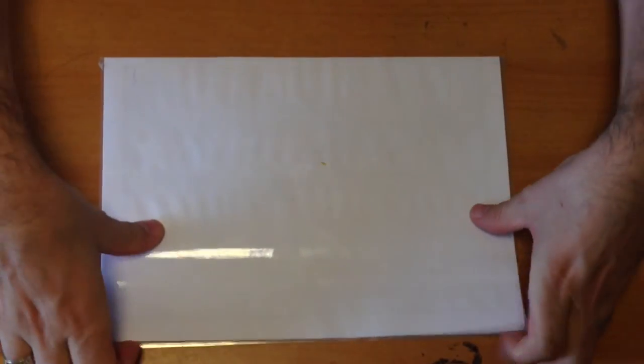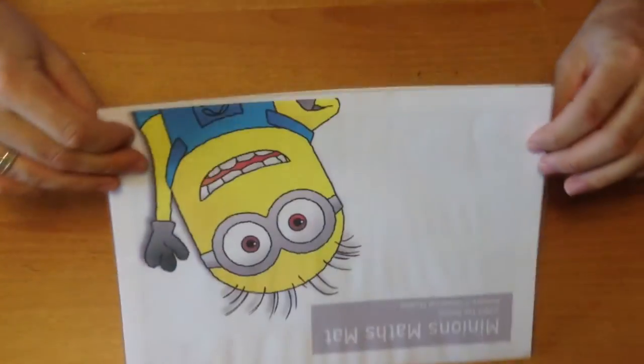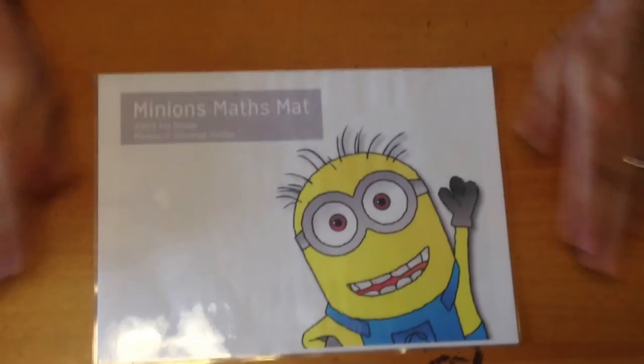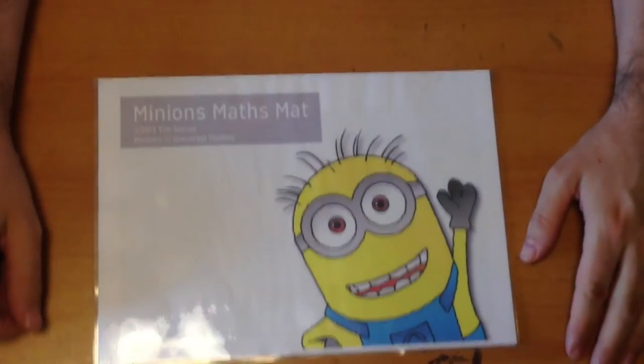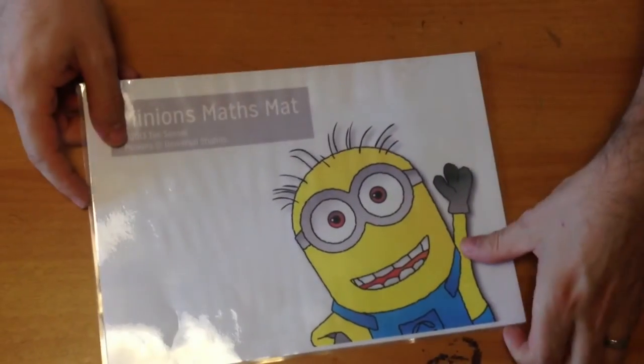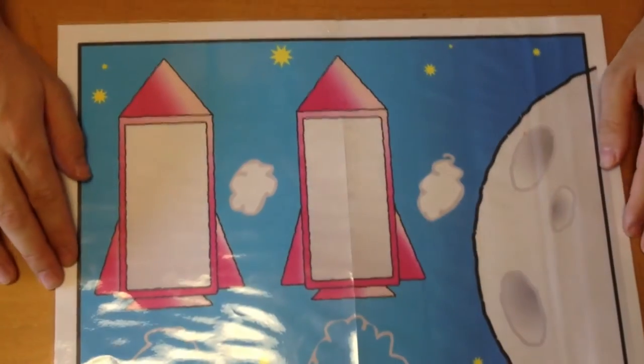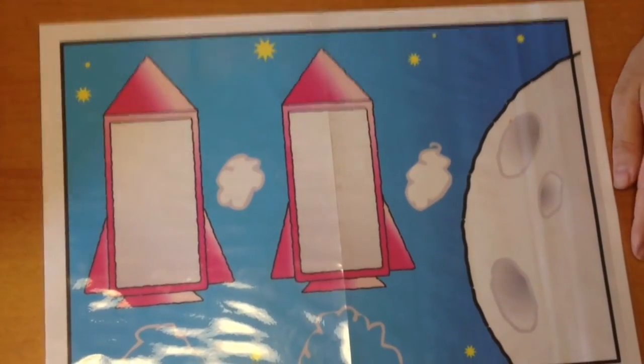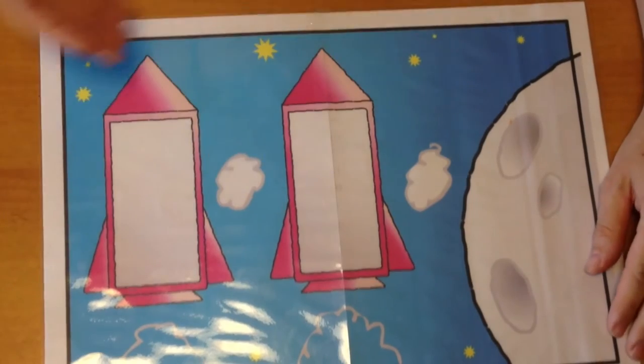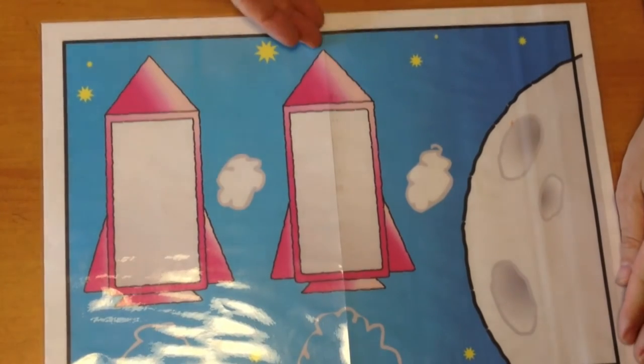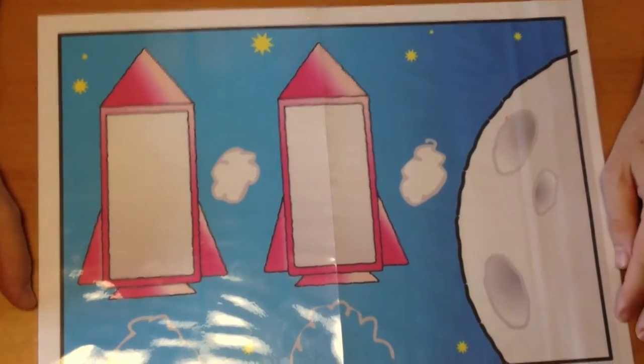Okay children, are you ready? Yes, it's Tim. Let's have a look inside. Wow. What can you see? Can you tell me? Good. Rocket, rocket and moon. That's right.